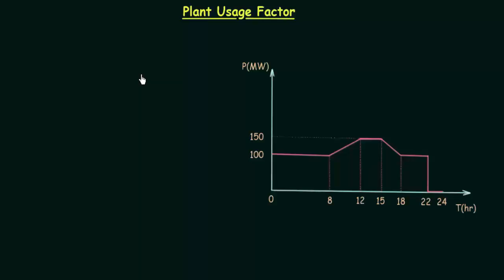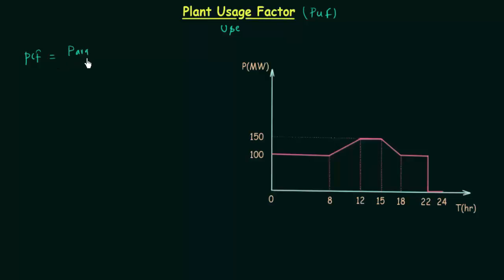In the last lecture we completed plant capacity factor, and now in this presentation we will study plant usage factor. It is represented by its abbreviation PUF. We also call it plant use factor. If you remember the last lecture, in case of plant capacity factor (PCF), it was equal to average power over the plant capacity or installed capacity. There was another way to write PCF also in terms of two energies.